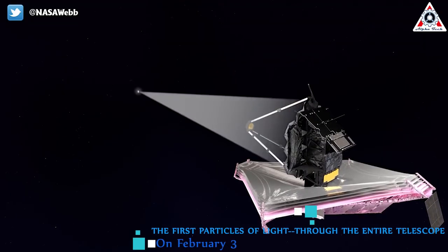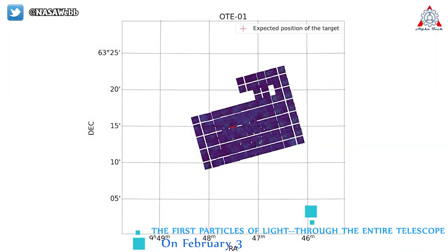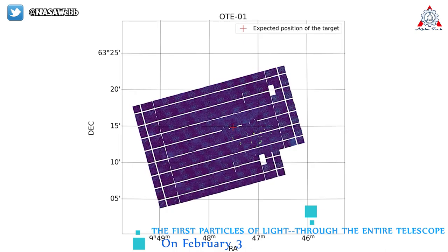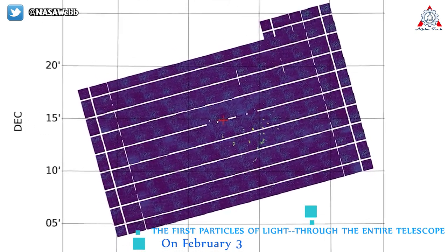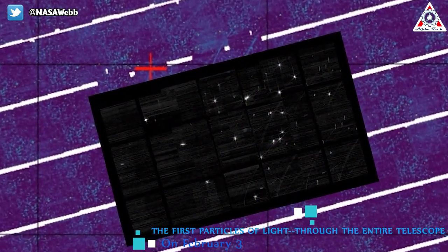On February 3rd, NASA announced that the first particles of light have made their way through the entire telescope. This is the closest scientists have come to their ultimate goal, to use the James Webb to image the universe as never before.